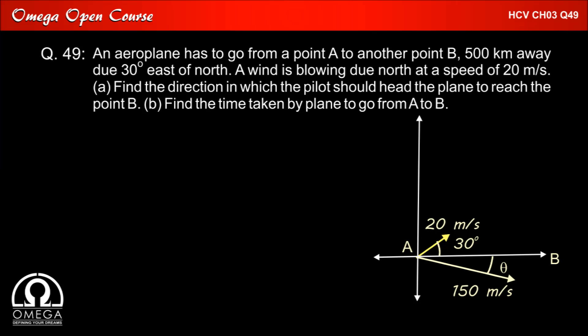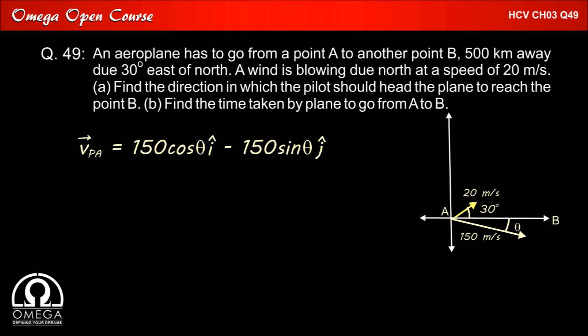So velocity of plane with respect to air is 150 cos theta i minus 150 sin theta j. And velocity of air with respect to ground is 20 cos 30° i plus 20 sin 30° j, which on simplification gives 10√3 i plus 10 j.